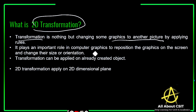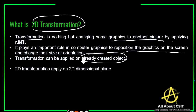Transformation plays an important role in computer graphics to reposition graphics on the screen and change their size or orientation. Transformation can be applied only on an already created object — this is very important. Just like applying filters to a picture you have already captured, the object must already exist before you apply modifications to it.